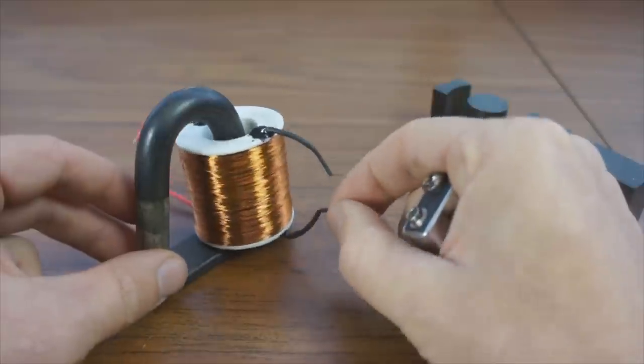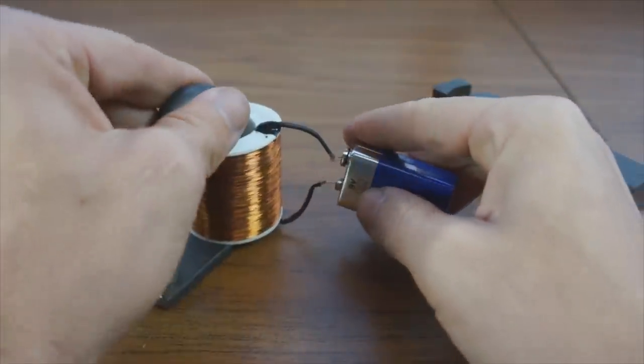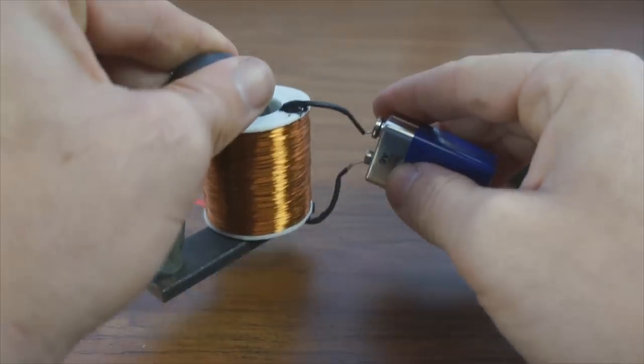So what we have here is soft iron. This is an electromagnet. Your conventional electromagnet, as long as it's energized with energy, it becomes an electromagnet.